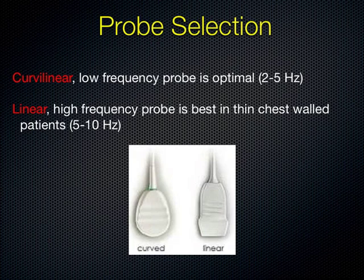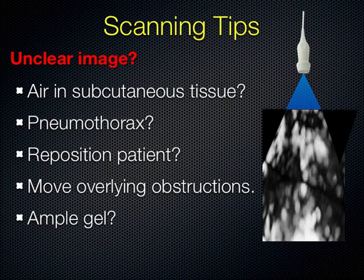A couple of quick imaging tips: if you don't have a great picture, troubleshoot. Do you have enough gel? Air is your enemy, gel is your friend. Make sure you have good contact with the chest wall, clear any obstructions like bandages or bra straps, and reposition the patient if needed. Also consider that the reason you can't see anything might be because there's air in the tissues or thorax — like a pneumothorax — obliterating your image, which itself tells you something. Looking at the overall picture is important.